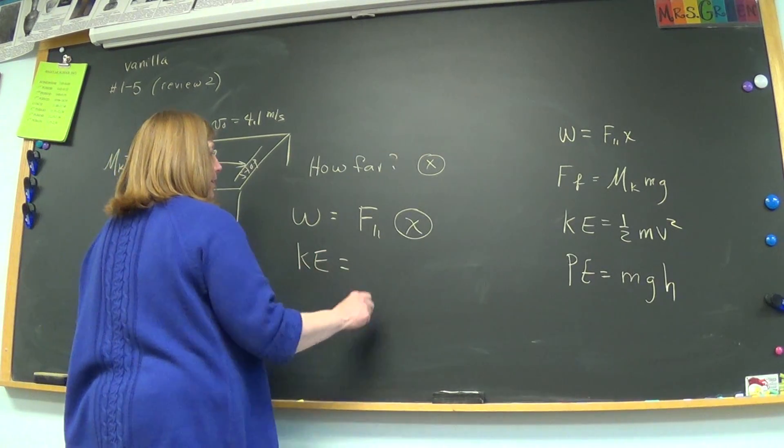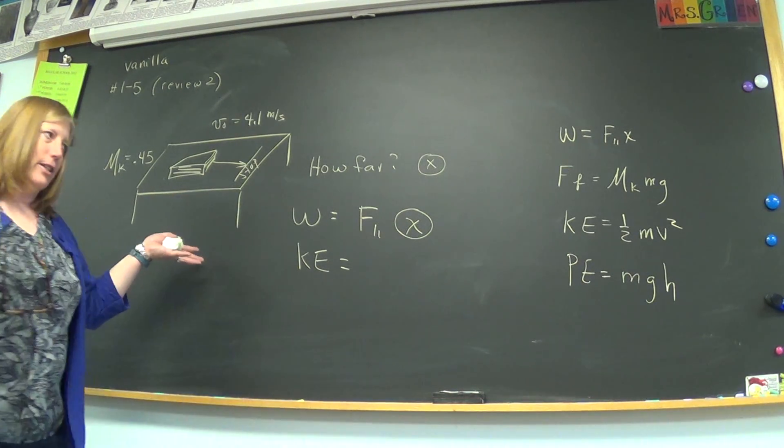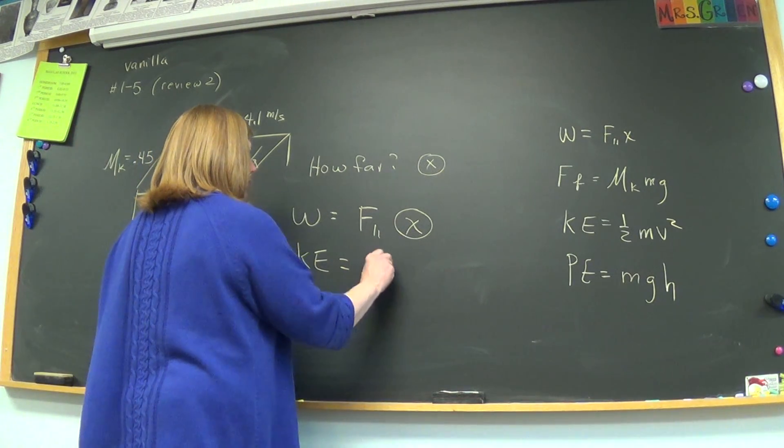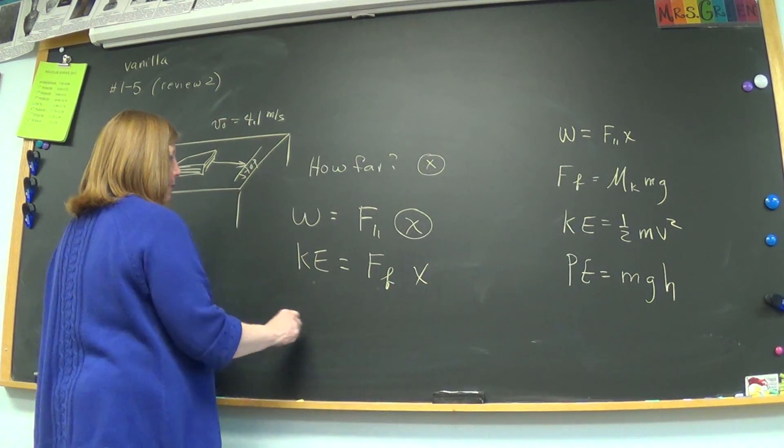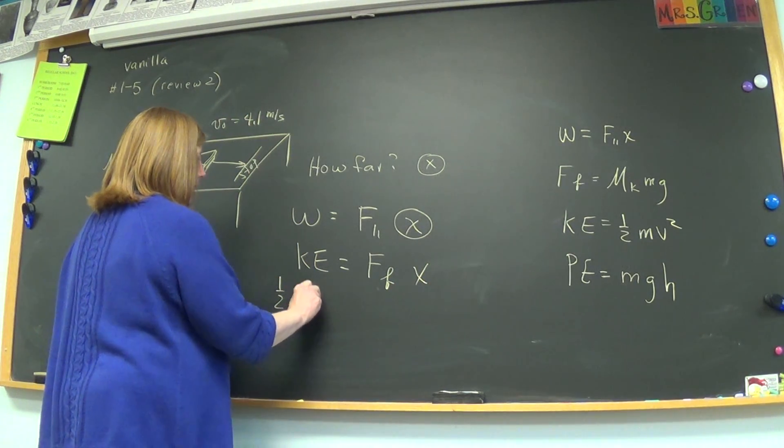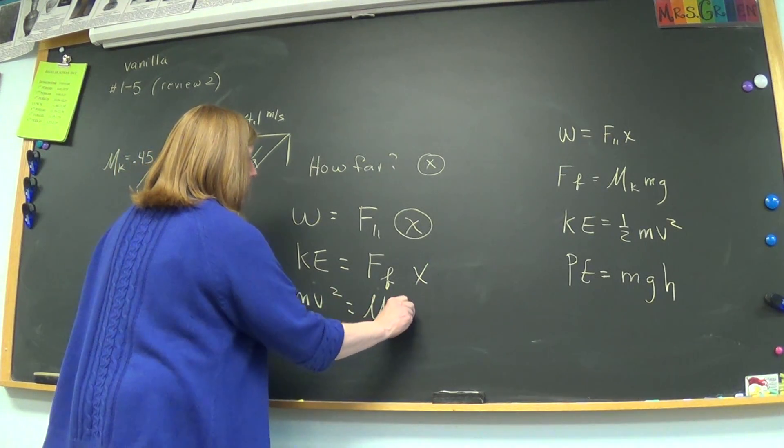And the force, what force is opposing that motion? Good old friction. So, I'll put force of friction and x. So, now I'll replace these with the formula, one half mv squared equals mk mg x.